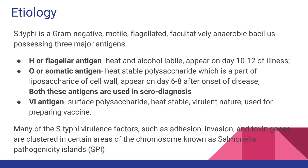S. typhi has three major antigens. First is the H antigen, called the flagellar antigen, which is heat labile and appears on day 10 to 12 after onset of disease. O is the somatic antigen, present on the cell wall as part of the lipopolysaccharide; it is heat stable and appears on days 6 to 8. Both H and O antigens are useful in serodiagnosis, for example in the Widal test.